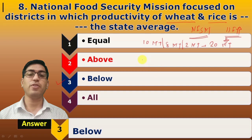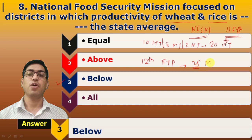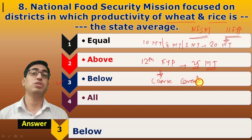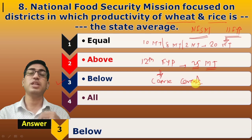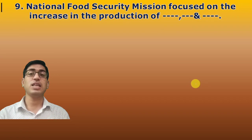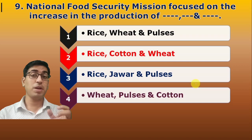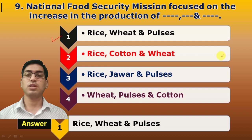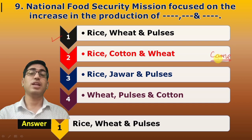The NFSM continued into the 12th Five-Year Plan, where the production target was raised to 25 million tons. In the 12th plan, coarse cereals were added as a fourth commodity alongside wheat, rice, and pulses. Ninth question: NFSM focuses on increasing production of which commodities? The answer is rice, wheat, and pulses — and additionally coarse cereals in the 12th plan — to increase productivity in below-average districts.